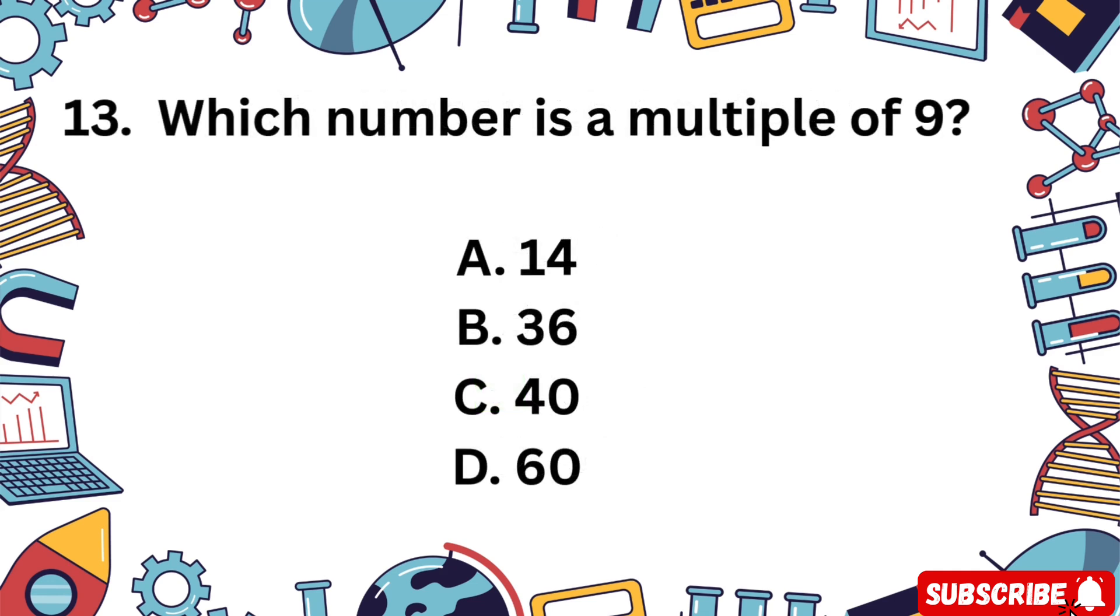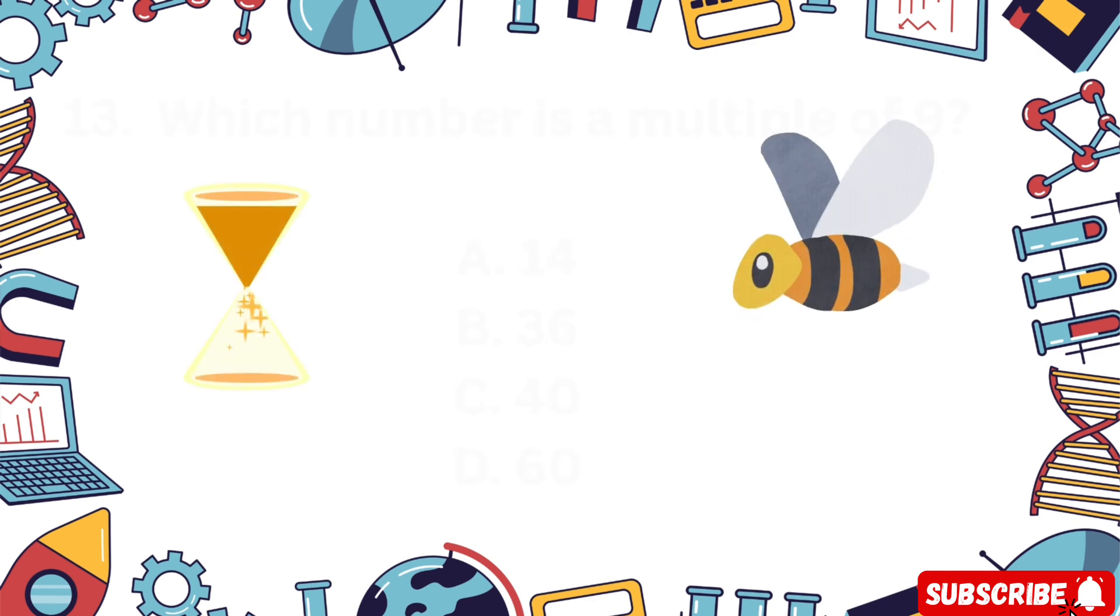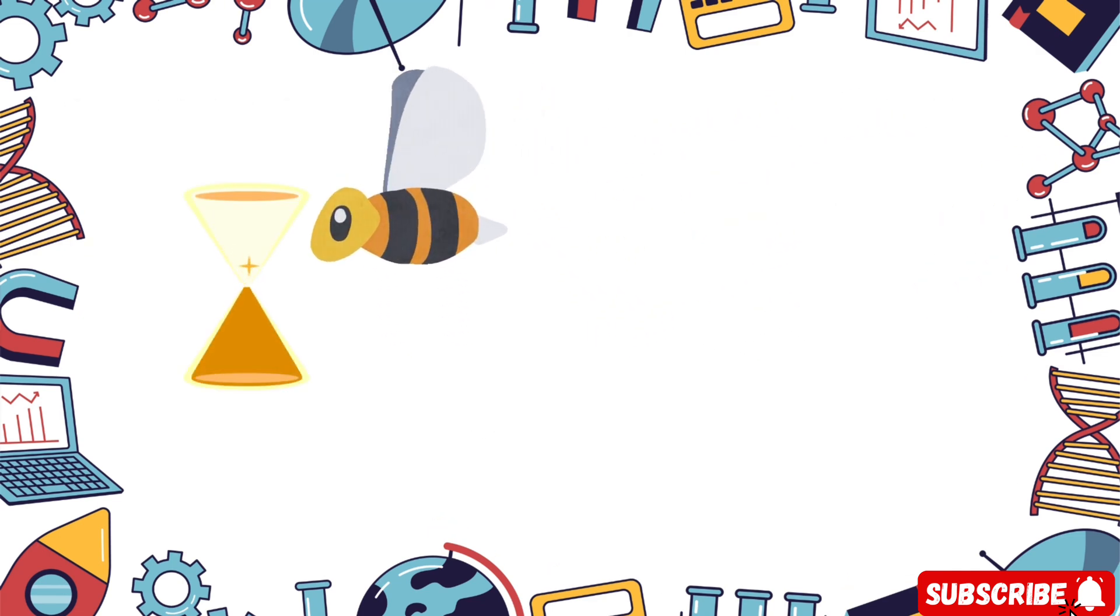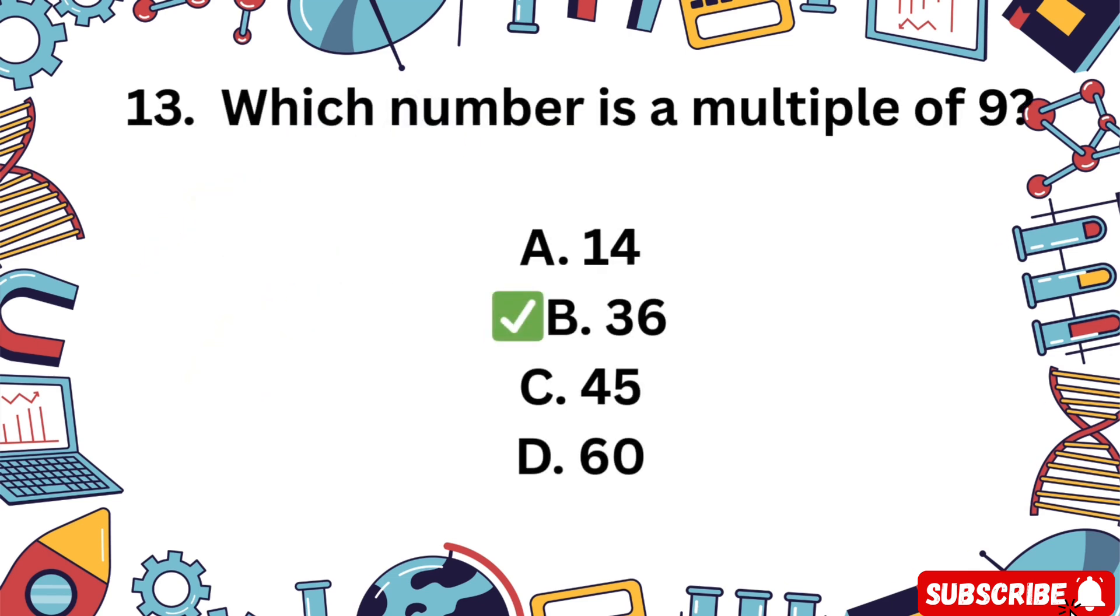Question 13. Which number is a multiple of 9? A 14, B 36, C 40, D 60. You've got 5 seconds. The correct answer is B 36. 9 times 4 is 36.